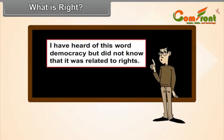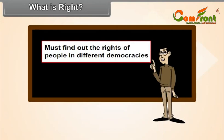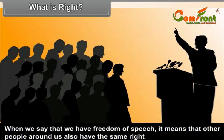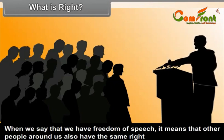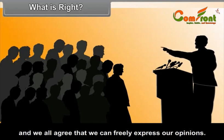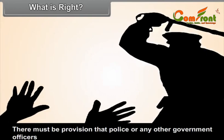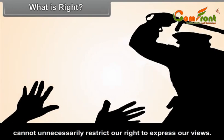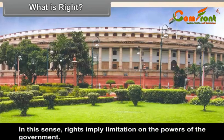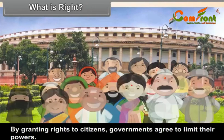Democracy is related to rights. When we say that we have freedom of speech, it means that other people around us also have the same right, and we all agree that we can freely express our opinions. There must also be legal provisions for protecting freedom of speech — provisions that police or any other government officers cannot unnecessarily restrict our right to express our views. In this sense, rights imply limitations on the powers of the government. By granting rights to citizens, governments agree to limit their powers.